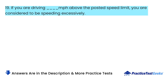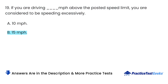If you are driving how many MPH above the posted speed limit, you are considered to be speeding excessively? A. Ten miles per hour. B. Fifteen miles per hour. C. Five miles per hour. D. Three miles per hour.